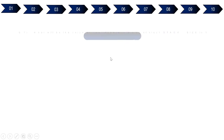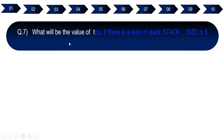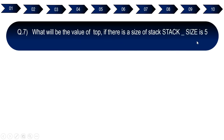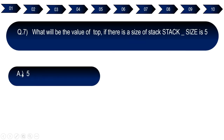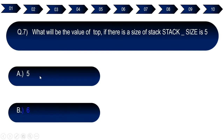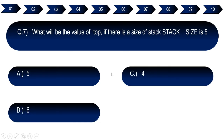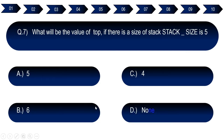Question number seven: What will be the value of top if the stack size is 5? Option A: 5. Option B: 6. Option C: 4. Option D: none. The right answer for question number seven is option C, which is 4.